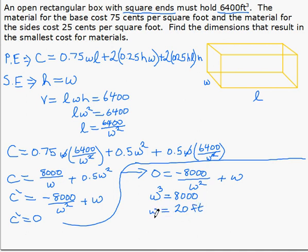Now we need H and L. Well we know that H is equal to W so H has to also be 20 feet. And using this secondary equation we can find that L when we put in 20 here has to be 16 feet.